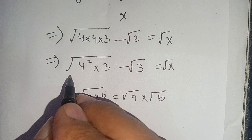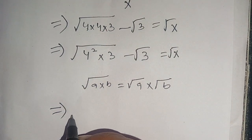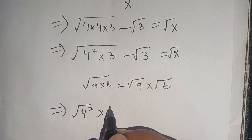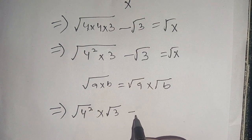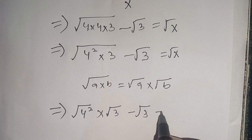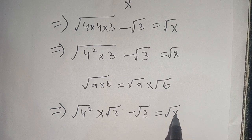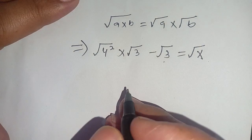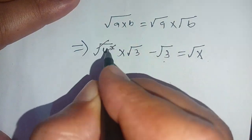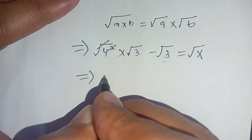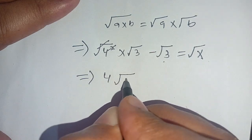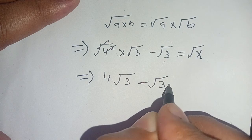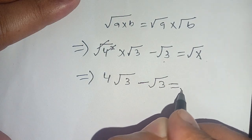Using this identity, we can write it as square root of 4 power 2 times square root of 3, minus square root of 3, is equal to square root of x. We can cancel the square by the square root, giving us 4 square root of 3 minus square root of 3 is equal to square root of x.